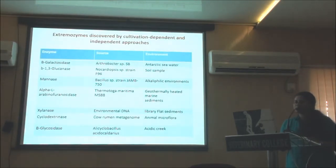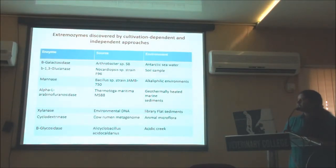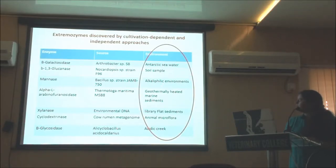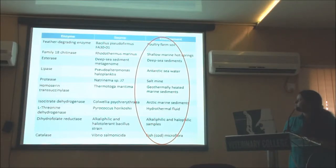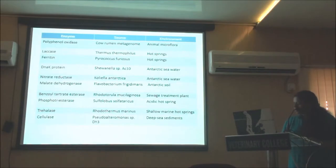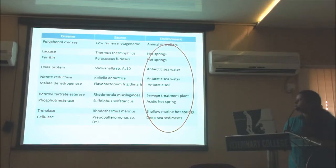There is a report on mining enzymes from extreme environments that lists enzymes discovered from various habitats. For instance, from Antarctic seawater and soil samples, they found galactosidase and xylanase; from laboratory flat sediments and acidic creeks; from poultry farm soil they isolated a feather-degrading enzyme; esterase from deep sea sediments; protease from salt mines; isocitrate dehydrogenase from Arctic marine sediments; catalase from fish gut microflora; polyphenol oxidase from animal microflora; and urease from shallow marine hot springs.